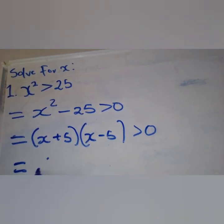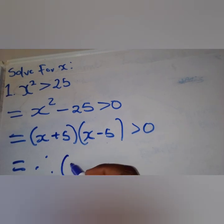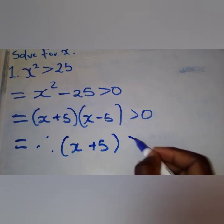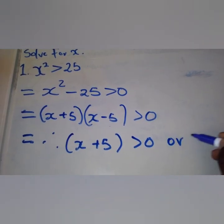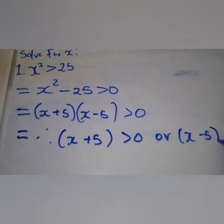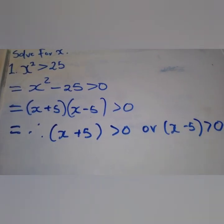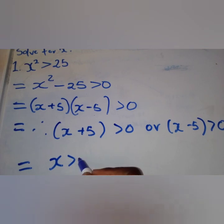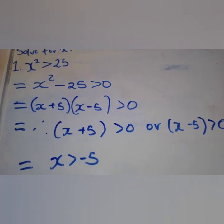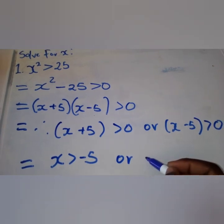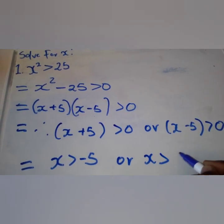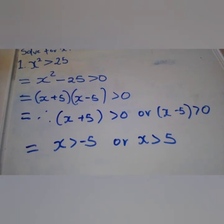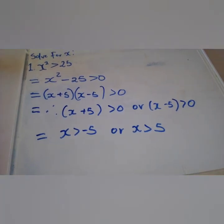We solve for x: (x + 5) > 0 or (x − 5) > 0. Since we are dealing with a squared term, these are quadratic inequalities and we need two answers for x. So x is greater than negative five, or x is greater than positive five. These are our answers.